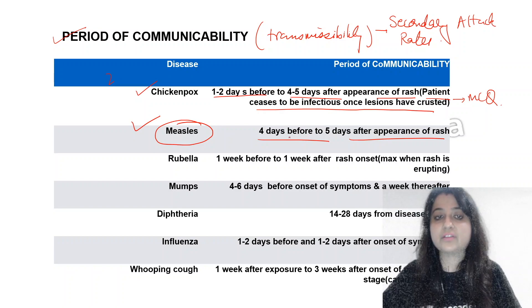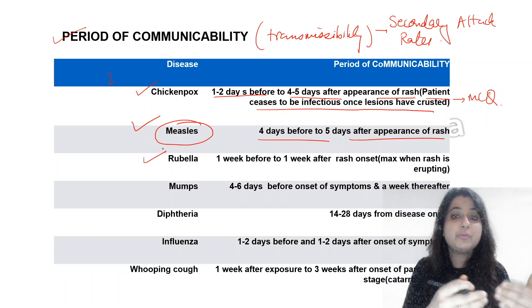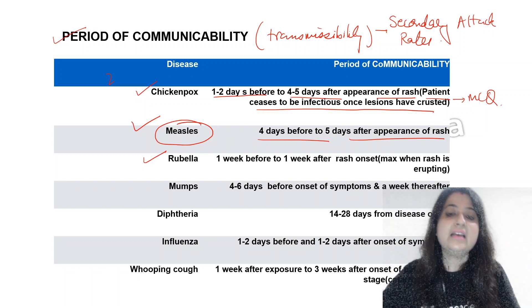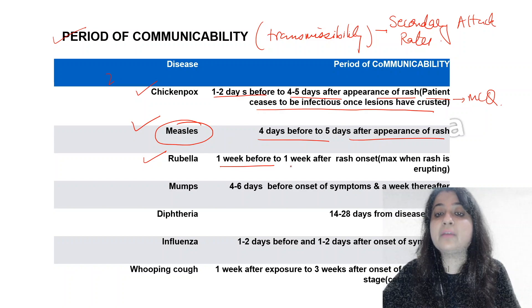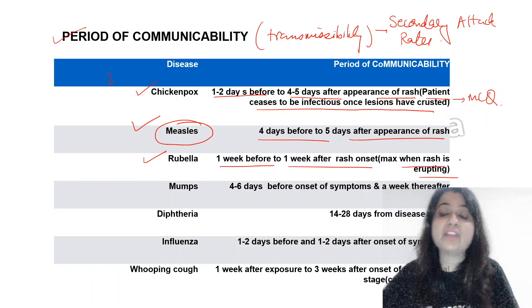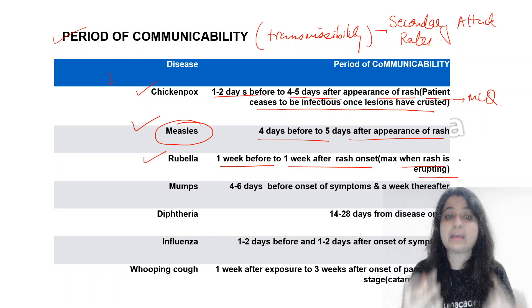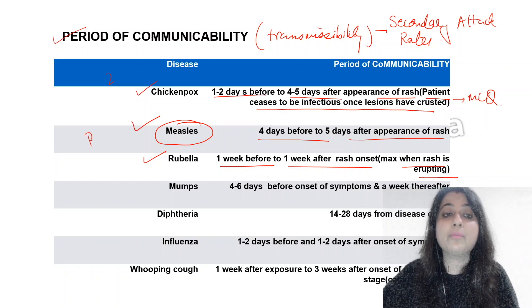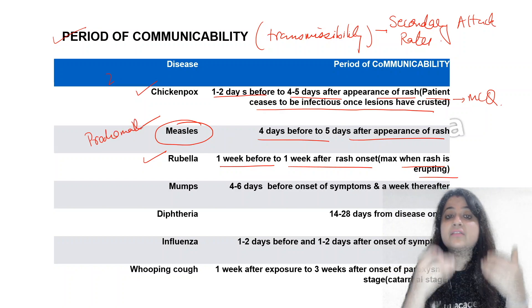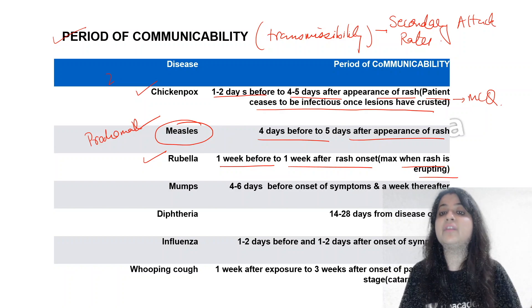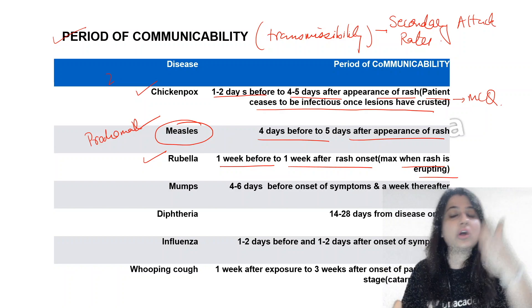Whenever you talk about measles, also compare rubella. Rubella: one week before to one week after rash onset, and it is maximum when the rash is erupting. For measles, infectivity is more in the prodromal phase — infectivity is high in the prodromal phase; after appearance of rash, infectivity decreases. For rubella, it is maximum when the rash is erupting.